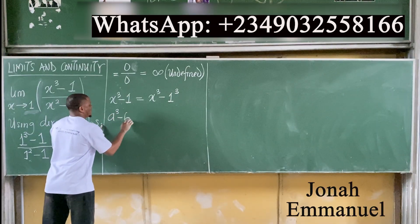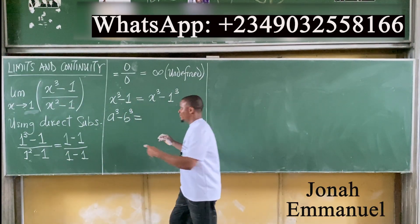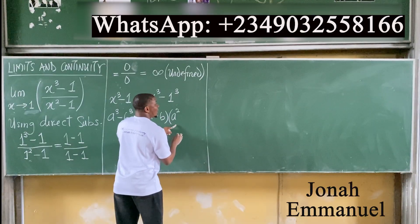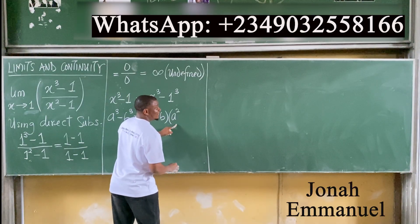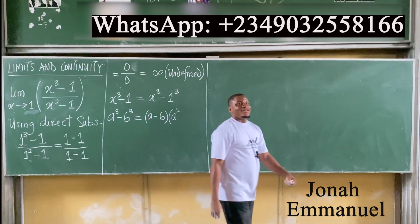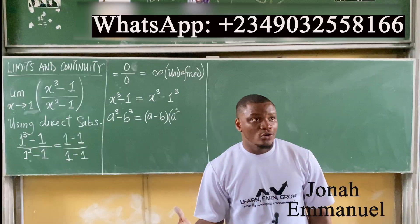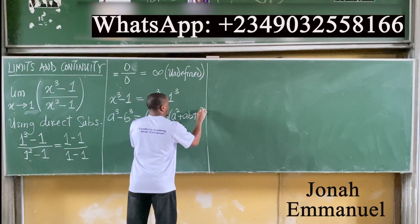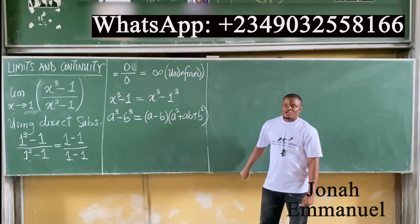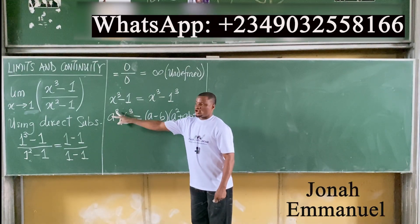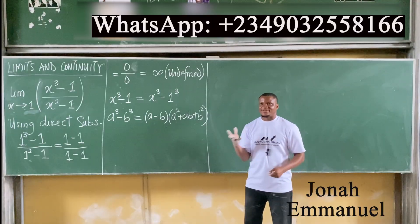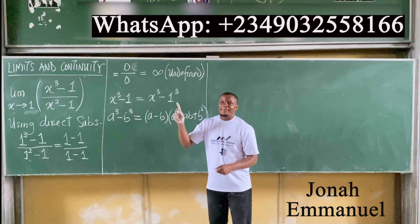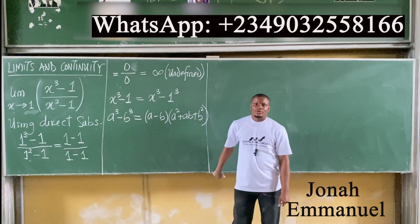Now, what is the difference of two cubes? If I have a cubed minus b cubed, what does this give me when expanded? This gives you a minus b, into a squared plus ab plus b squared. So if you have two terms subtracting and they are being cubed, you get: first minus second, multiplied by first squared plus the product of first and second, plus second squared.